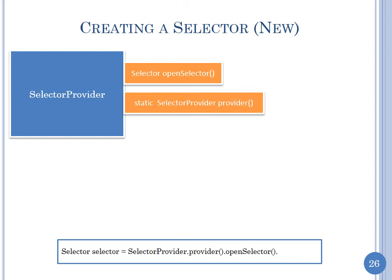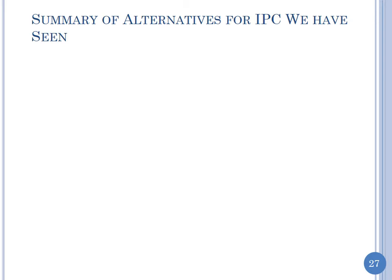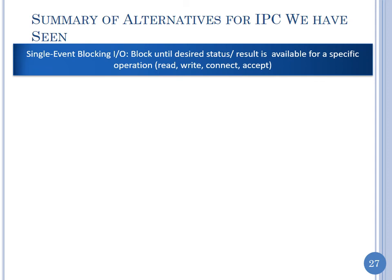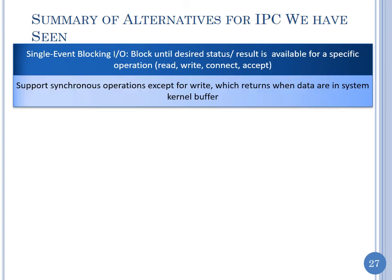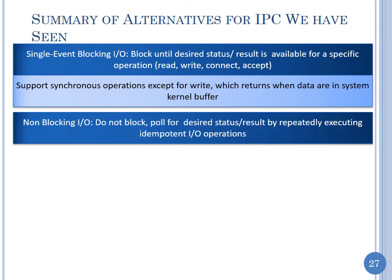With these abstractions you can do essentially any form of IPC. Let's summarize what we've seen. Single-event blocking IO: each IO operation blocks and returns the desired status or result. All operations other than write are synchronous — they block until the operation completes. For write, we block until the data are in the kernel buffer; after that we just hope everything goes well, and with TCP/IP underneath, if the host doesn't crash and the network doesn't partition, it will finish.